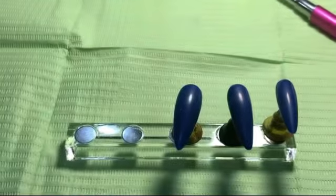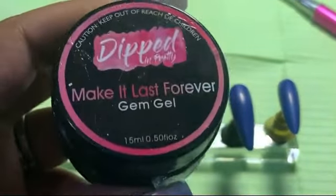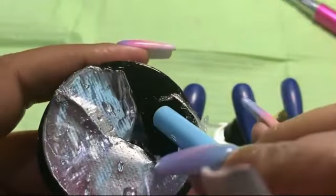Now this third one, I'm going to use again Dipped in Pretty's Make It Last Forever Diamond Glue. This thing used to be the best until I noticed that we could do a full nail with or without top coat. It's going to shift.